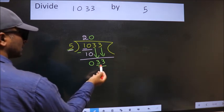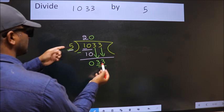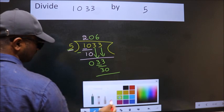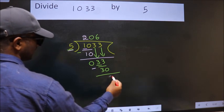A number close to 33 in the 5 table is 5 times 6, 30. Now we subtract, we get 3.